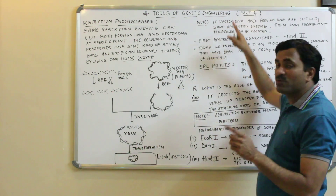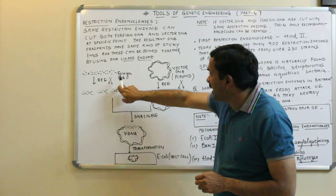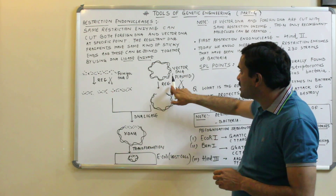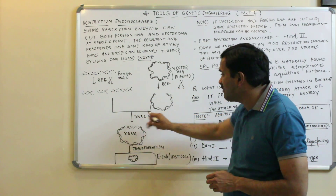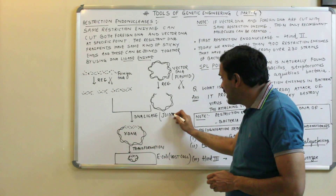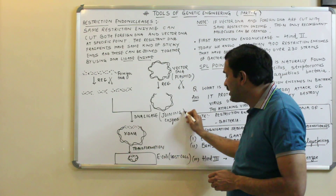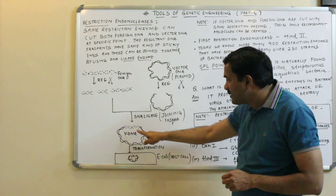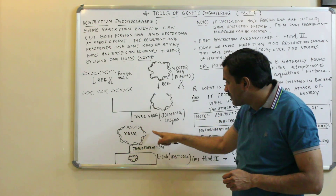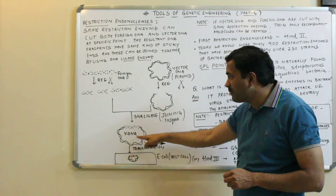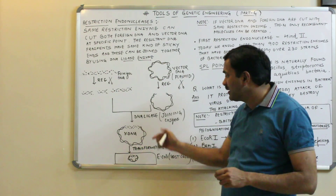As discussed in video number three, the sticky end of the foreign DNA and the sticky end of the vector DNA will both be joined together with the help of an enzyme known as DNA ligase. The joining enzyme is DNA ligase, so the sticky ends will join together, and this is what forms the foreign DNA joined with the vector DNA.